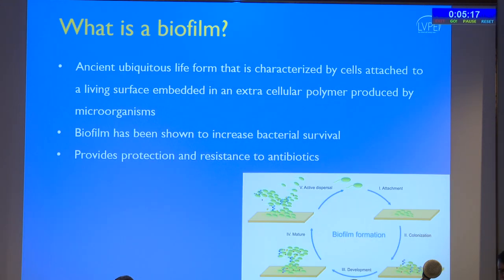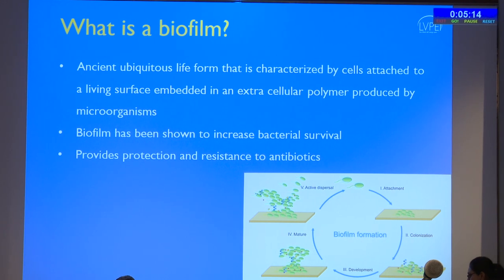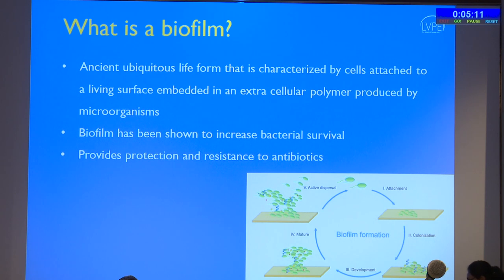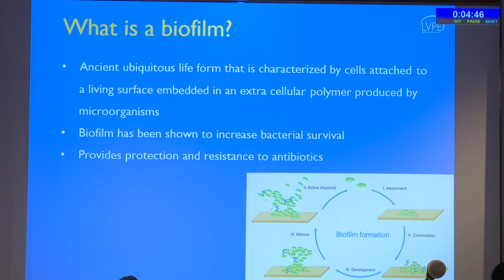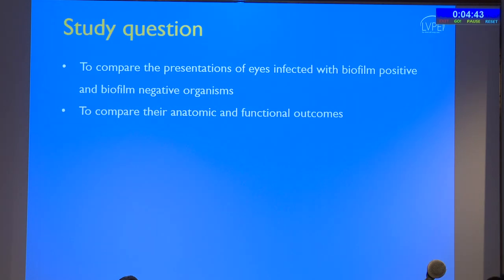Whether biofilm formation plays a role in increasing antimicrobial resistance or reducing overall clinical prognosis is currently unknown. A biofilm is an ancient ubiquitous life form characterized by cells attached to a living surface embedded in an extracellular polymer produced by the microorganisms themselves. It provides a protective cover around the microorganism, resulting in resistance to antibiotics. Our study question was to compare the presentation of eyes infected with biofilm-positive and biofilm-negative organisms and compare their anatomic and functional outcomes.